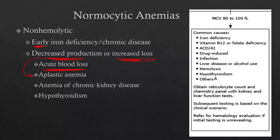For decreased production, you can think aplastic anemia — you're just not making RBCs. Also anemia of chronic kidney disease: the kidneys secrete EPO (erythropoietin), which stimulates the bone marrow to produce RBCs. With chronic kidney disease, you have decreased EPO and therefore less RBC production — that's why patients on dialysis often receive EPO supplementation. Another good one always tested on the wards is hypothyroidism, especially in the elderly.